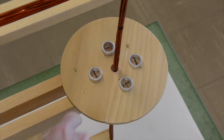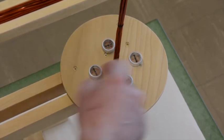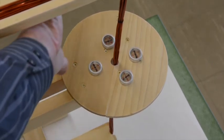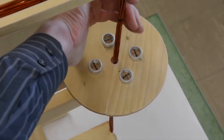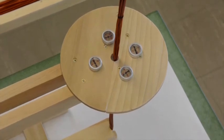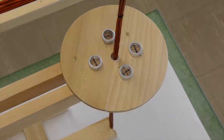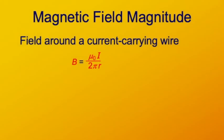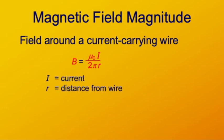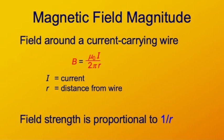When the direction of the current is downward, all the compass needles point around in a clockwise fashion. If you point your thumb in the direction of the current, the fingers of your right hand naturally curl clockwise in the direction of the magnetic field. The magnitude of this field is μ₀I / 2πr, where I is the current and r is the distance from the wire — so the field is inversely proportional to the distance from the wire.